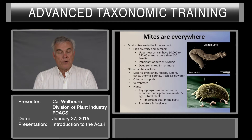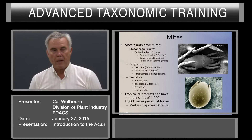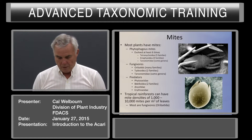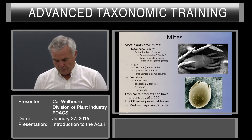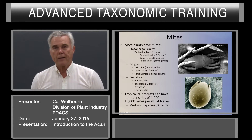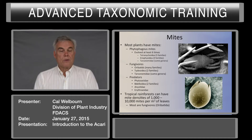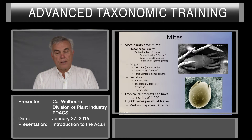In addition to the phytophagous mites, there are predators and fungivores on plants. Most plants have mites. Phytophagous mites have evolved at least six times. Most notable are the Tetranichoidea, the Eriophyoidea, some genera in the Tarsonemidae, and at least one family in the Eupodoidea. Other mites include fungivores, mainly oribatids, tydeoids, and many of the tarsonemids.